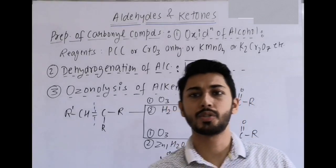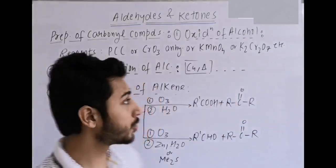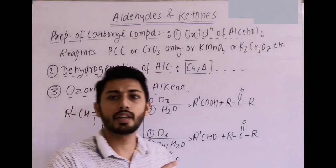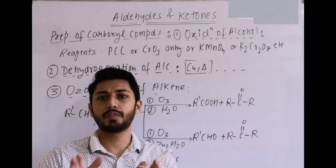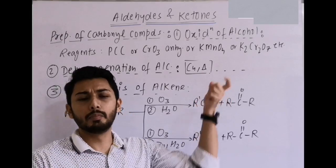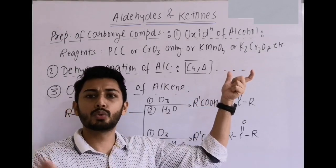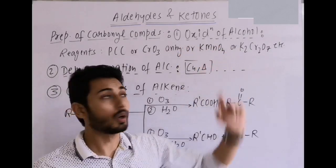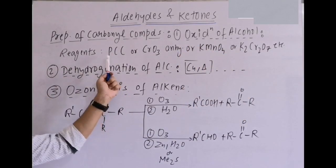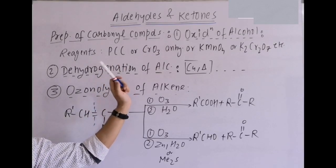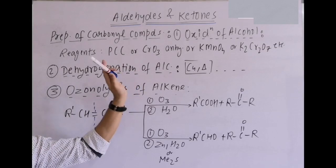Now the more relevant part: preparation of carbonyl compounds. First reaction is oxidation of alcohol, already covered in the alcohol topic. Key reagent: PCC (pyridinium chlorochromate) — it oxidizes primary alcohol to aldehyde, secondary alcohol to ketone, and gives no reaction with tertiary alcohol.